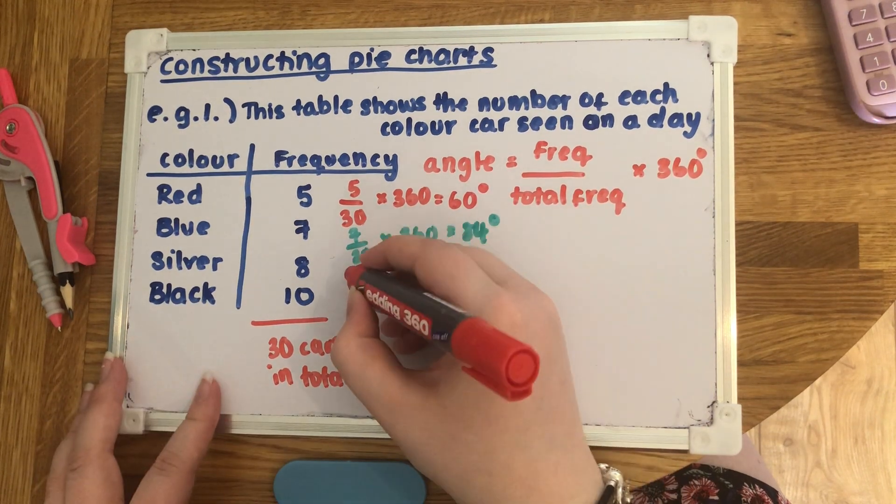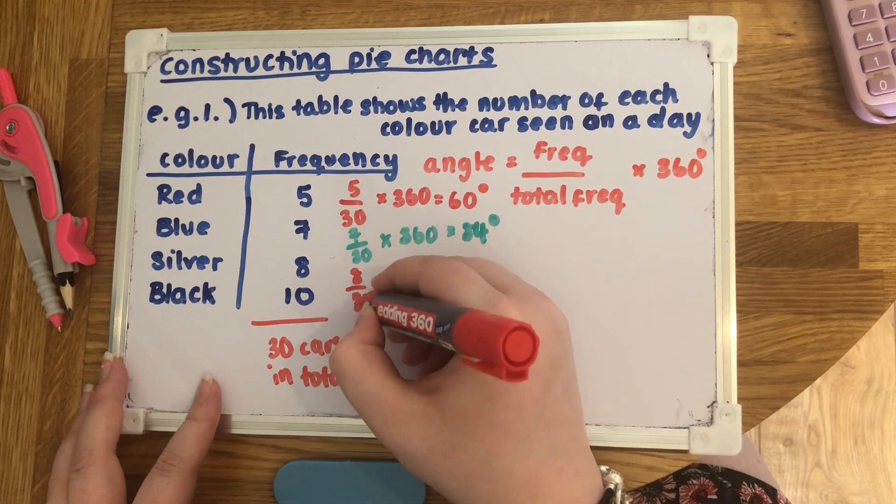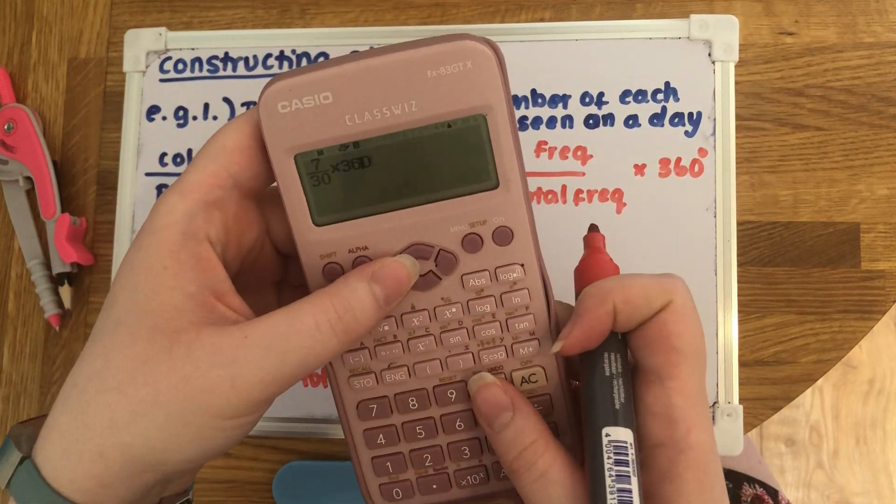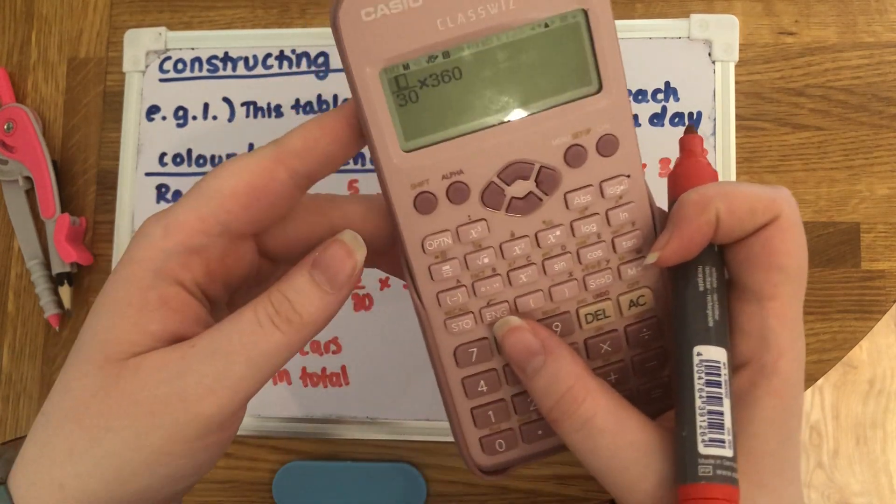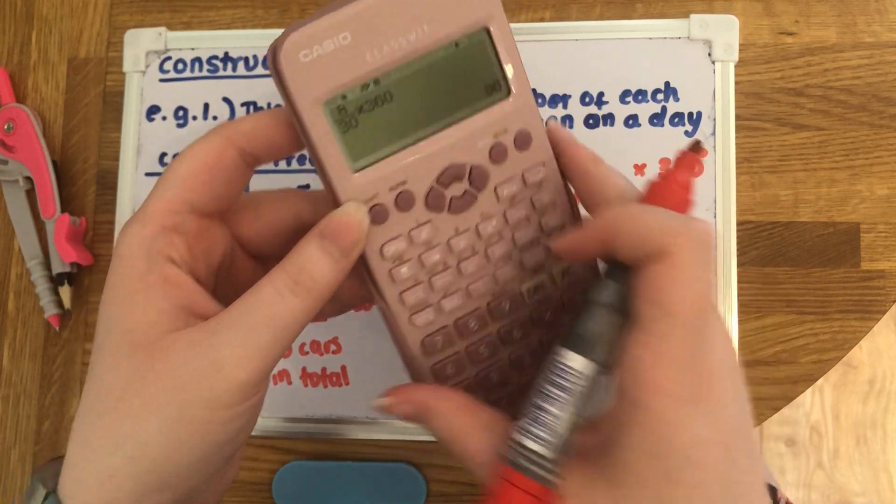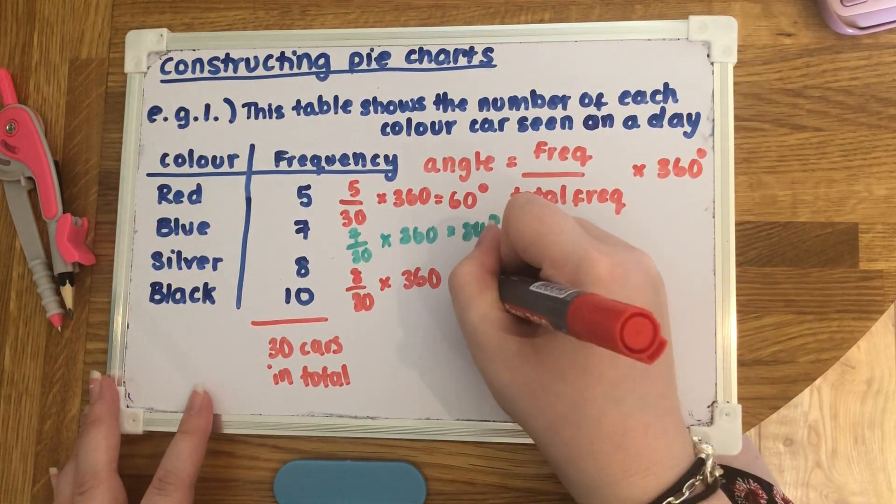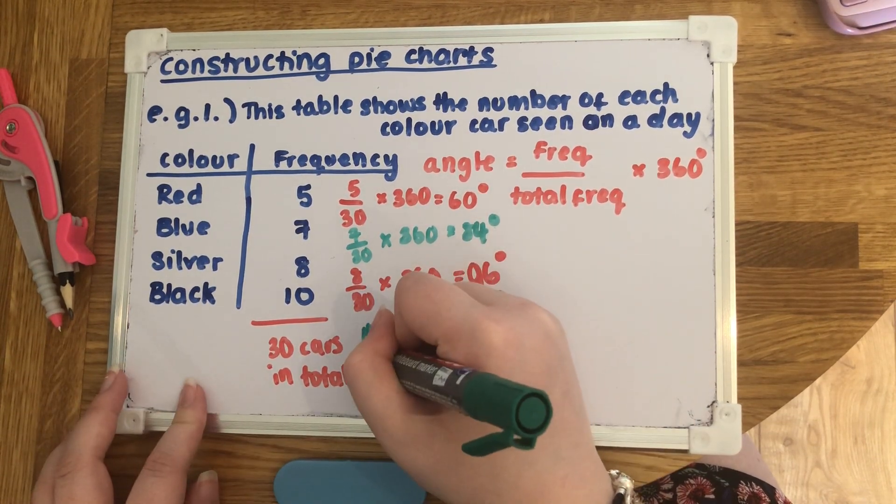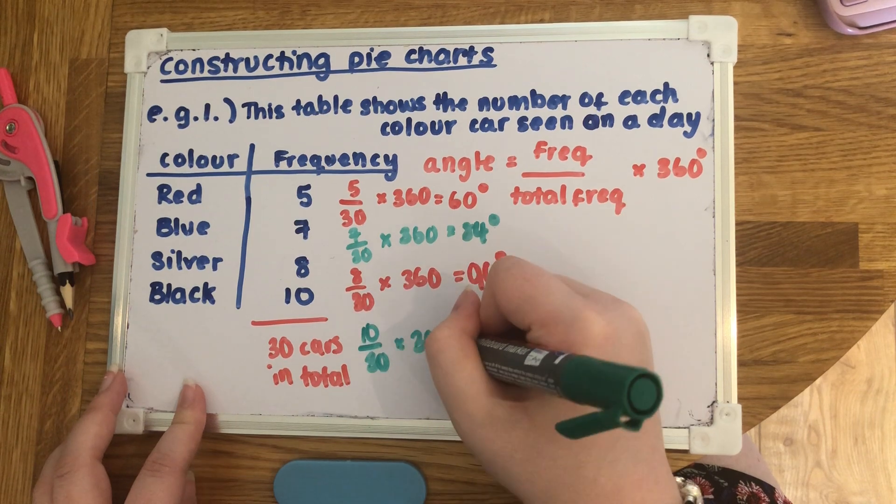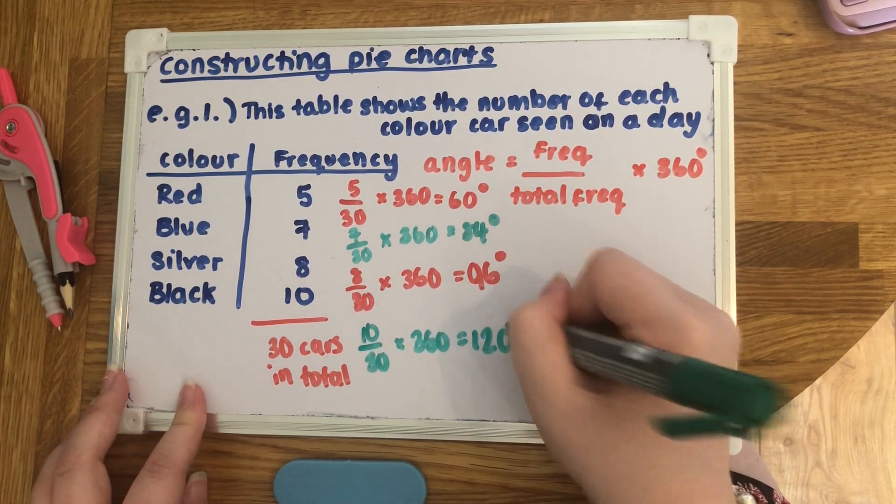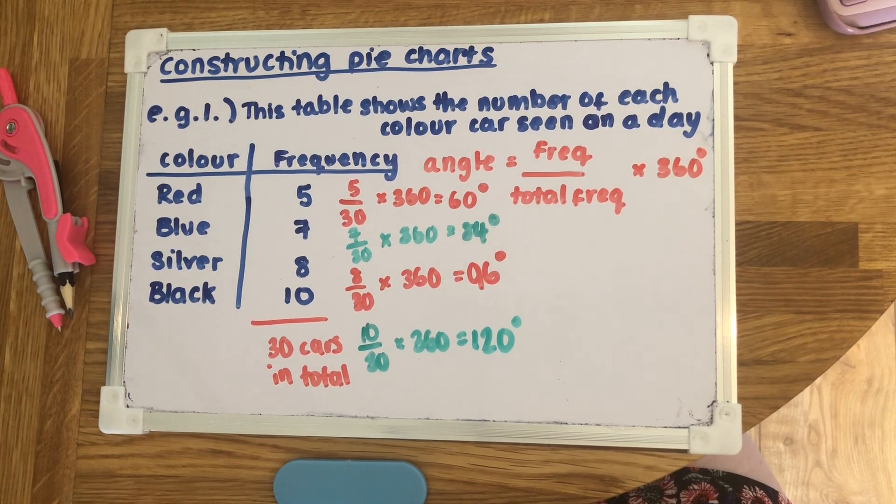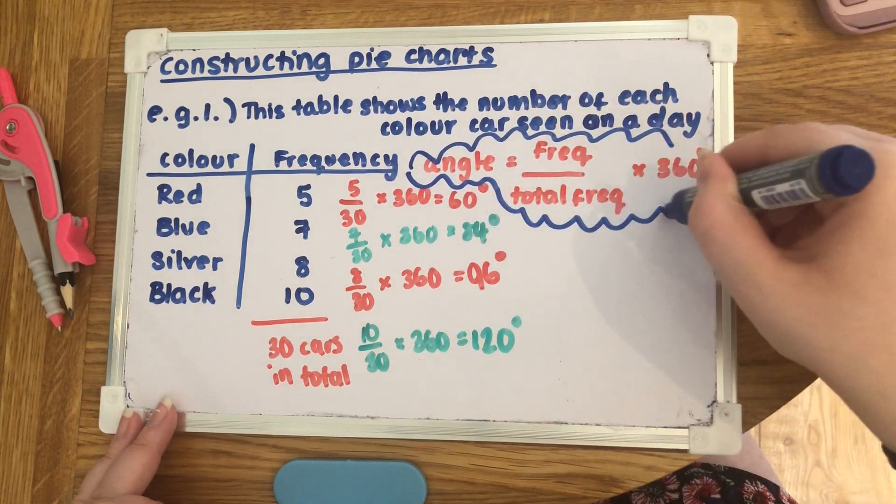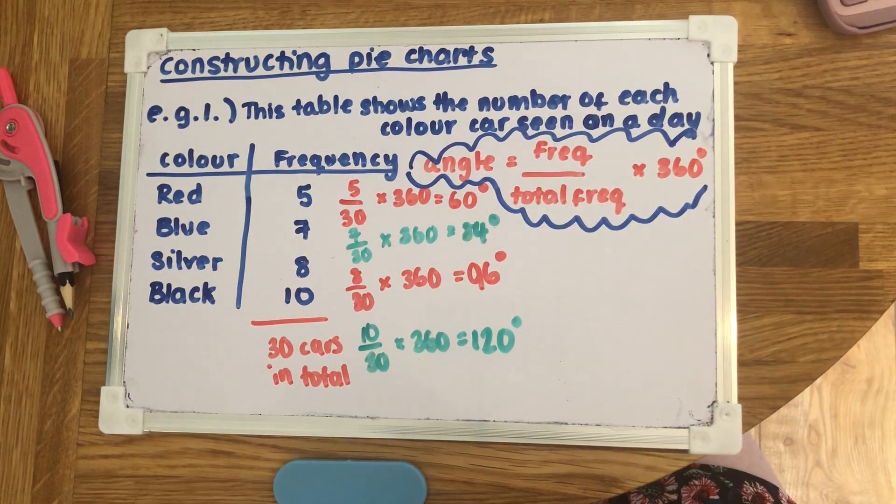Again for the next one, there was eight silvers times by 360, which gives us 96 degrees. The last one: 10 out of 30 which would give us 120 degrees. It's just really important that we remember this formula. This formula will be used for any question that you'll need to do when constructing pie charts.